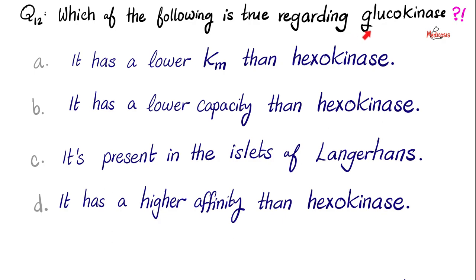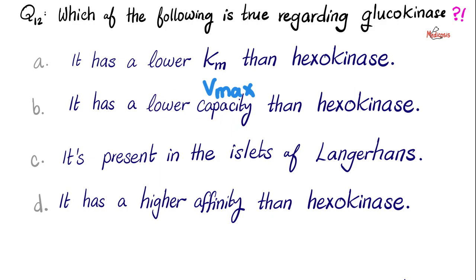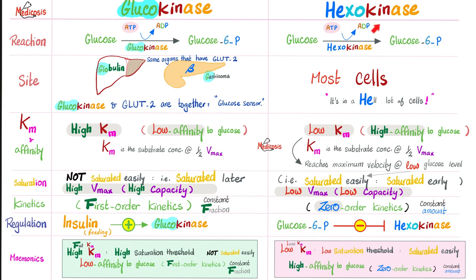Next: which of the following is true regarding glucokinase? Is it A, it has a lower Km than hexokinase? B, it has a lower capacity than hexokinase? C, it's present in the islets of Langerhans? Or D, it has higher affinity than hexokinase? The word capacity here means Vmax. If something has low capacity, it means it is easily saturated. If something has high capacity, it means it's not easily saturated.